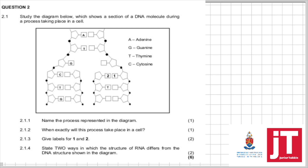State two ways in which the structure of RNA differs from DNA structure. DNA is double-stranded; RNA is single-stranded. DNA has thymine; RNA has uracil. Simple.